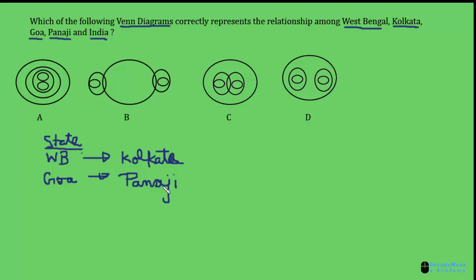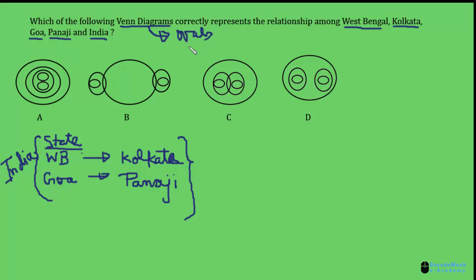Kolkata is in West Bengal, and Panaji is in Goa, and all these places are in India. Venn diagrams consist of circle-like shapes or ovals representing certain elements.